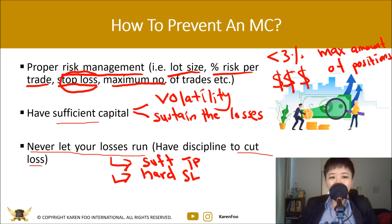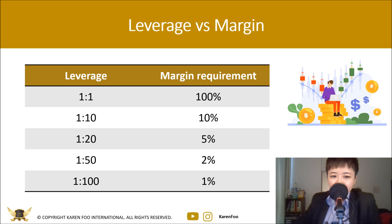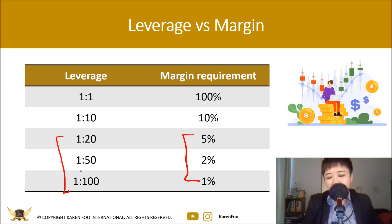What's the relationship between leverage and margin? The higher the leverage, or the lower the margin requirement, the more a 1% price movement will cause a large profit or large loss. Forex brokers commonly offer margin requirements of 1–5% or leverage of 1:20 to 1:100. Some brokers even offer 1:400. This doesn't mean you should use high leverage.